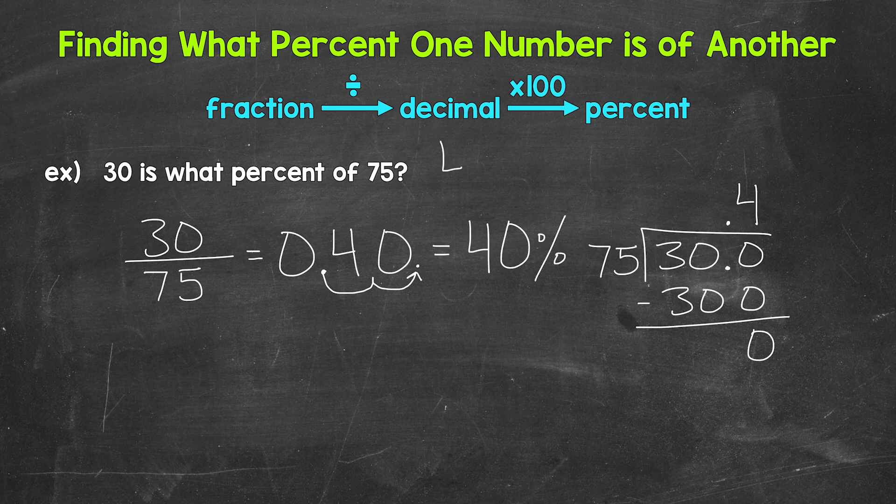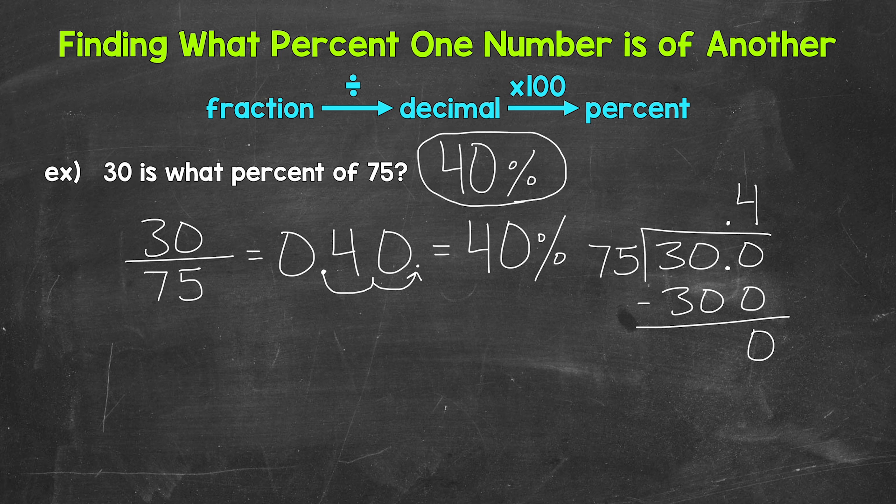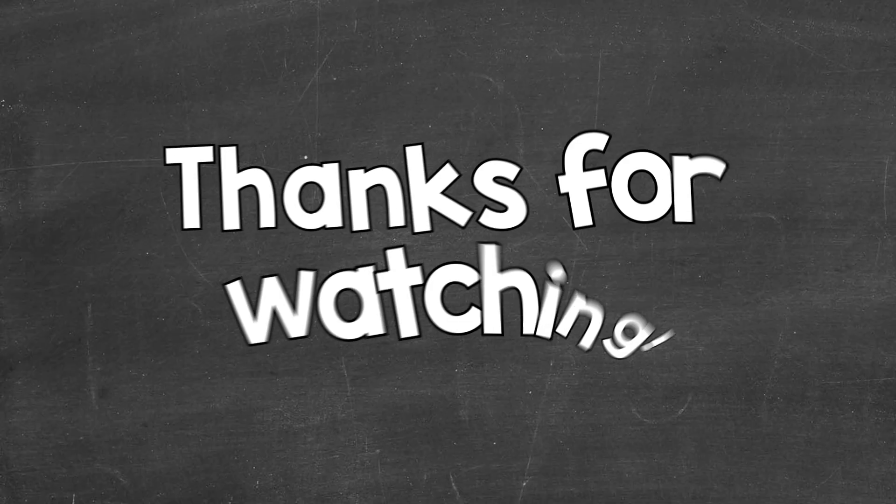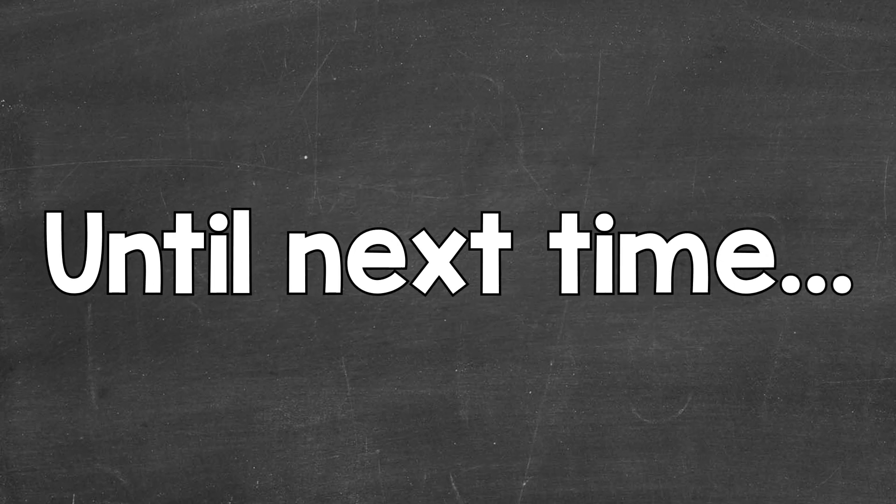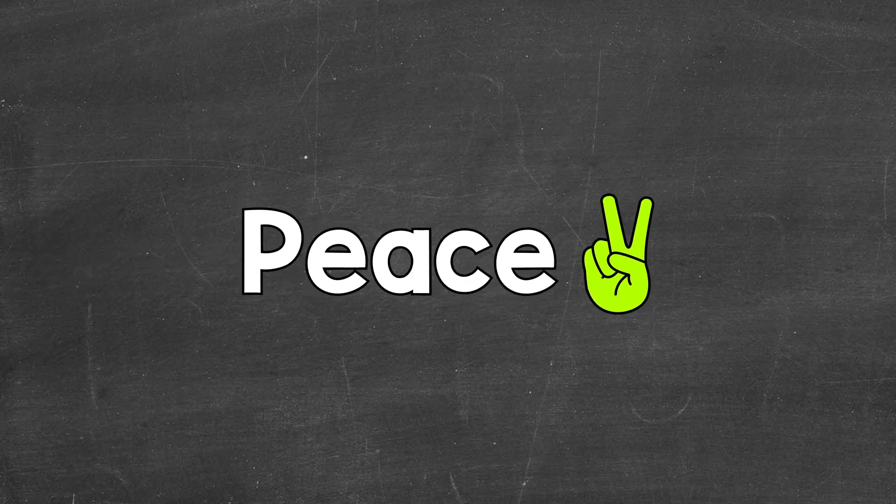30 is 40% of 75. So there you have it. There's how to find what percent one number is of another number. I hope that helped. Thanks so much for watching. Until next time. Peace.